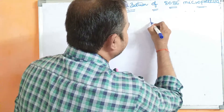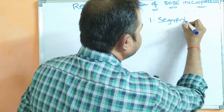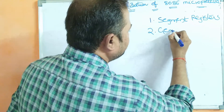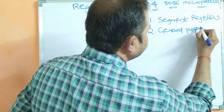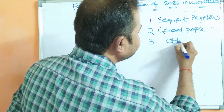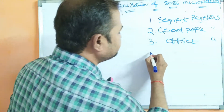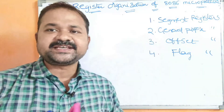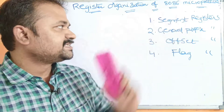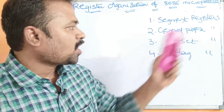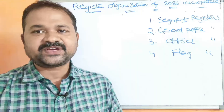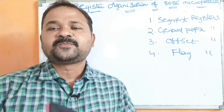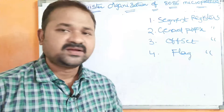The registers in 8086 are mainly classified into four types: the first type is segment registers, the second is general-purpose registers, the third is offset registers, and the fourth is flag registers. A video on flag registers has already been uploaded — the link will be shared in the description and comments, so please go through that link to learn about flag registers.